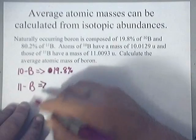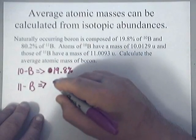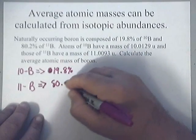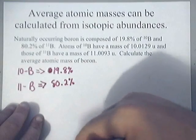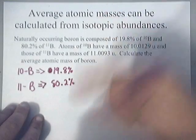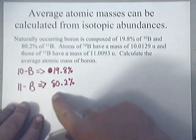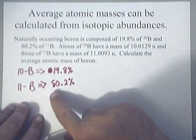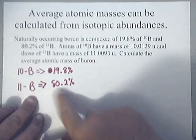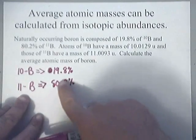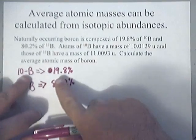That means that the remaining percent, the 80.2%, is actually made up of boron-11 isotope. Meaning, the atomic weight of the boron is closer to the boron-11 because 80% of it is boron-11, while really just 20% of it is boron-10.